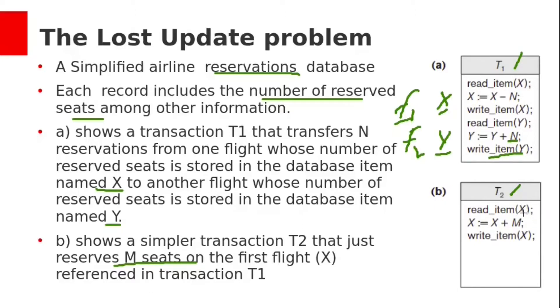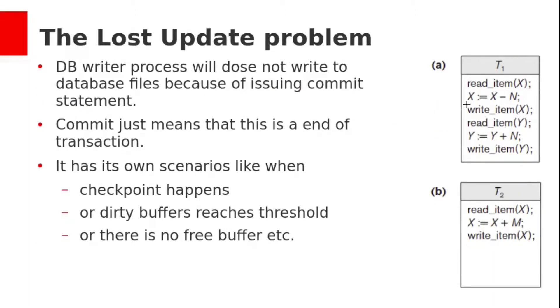The second transaction reads item X — we want to reserve M seats on flight F1. So X equals X plus M, and we store that onto the disk.